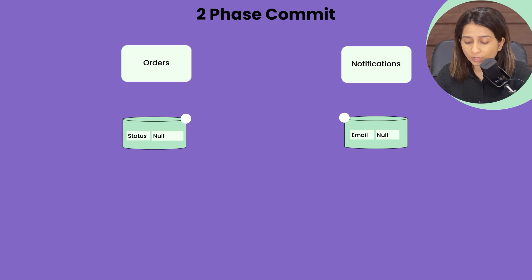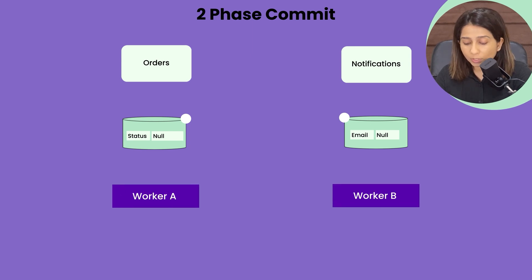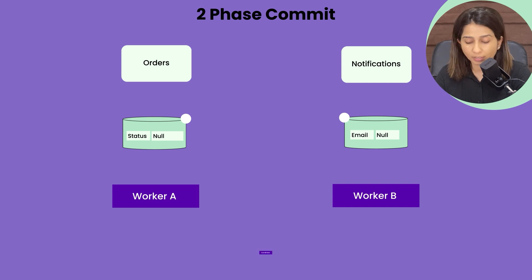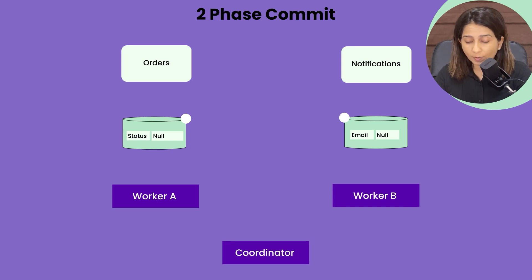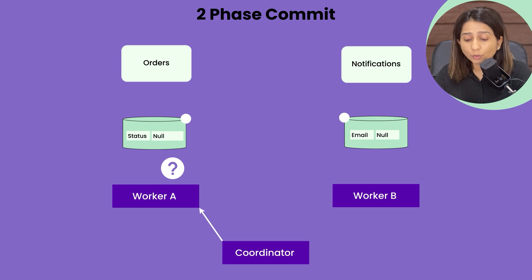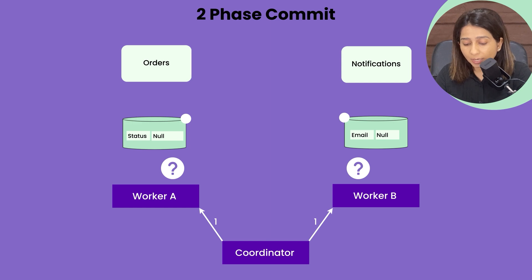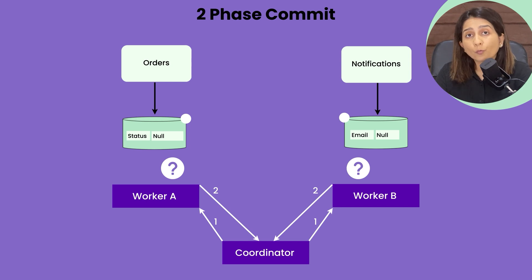Apart from the two services, you might have another service or worker called the coordinator. In the first phase, this coordinator will ask both services if they are ready for a two-phase transaction — can you update the state? Both services reply yes. This is the voting phase — both services confirm they can update the state.